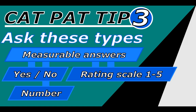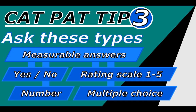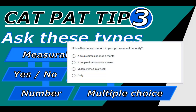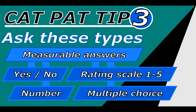Also look for questions with multiple choice options where you can count how many people selected each choice. This is useful when the range of possible answers is wide. For example, if asking how often someone uses AR, offer options like: once a month, once a week, multiple times a week, or every single day. That way you have a variety of choices and can do statistics on which was most popular — those are really useful types of questions.